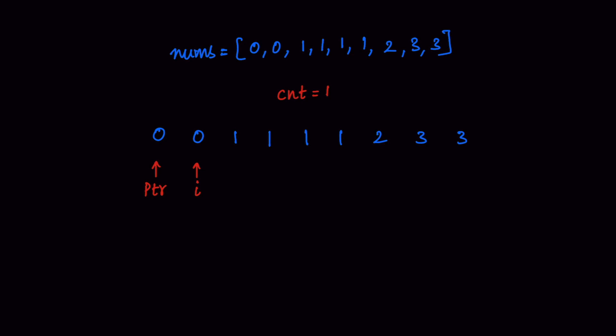If nums[PTR] equals nums[i] and the value of count equals 1, it means there is only one occurrence of the unique element. Since the question says we can have at most two occurrences, we increment the PTR value and also increment the count value. Then we perform the swapping of nums[PTR] and nums[i], but in this case there is no change because nums[i] and nums[PTR] are pointing to the same location.